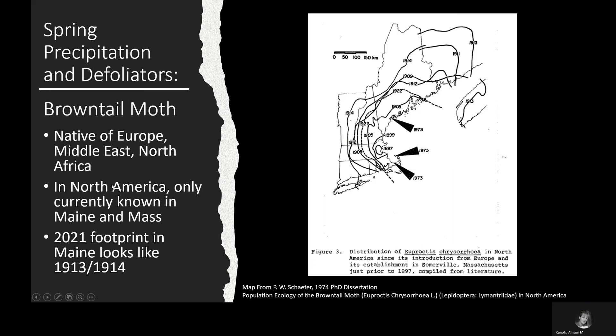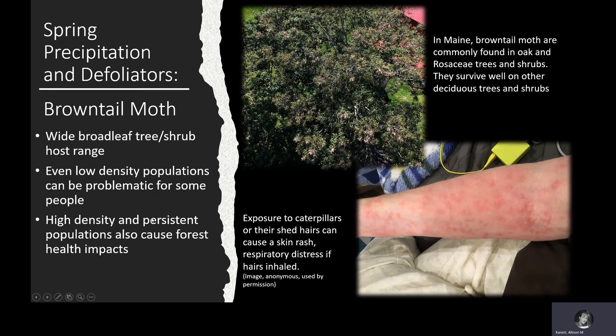Brown-tailed moth has a wide host range, including many broadleaf trees and shrubs. In Maine, it is most frequently encountered on rose family hosts such as apples, cherries, serviceberries, hawthorns, and others, and also on oaks, including both red and white oak groups. It can also survive well on other hardwood trees and shrubs — we find it fairly frequently on white and gray birch and also on elm species.